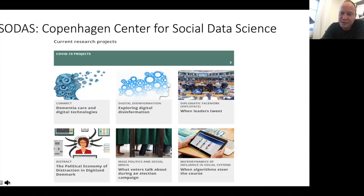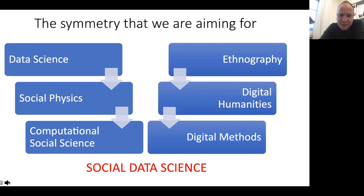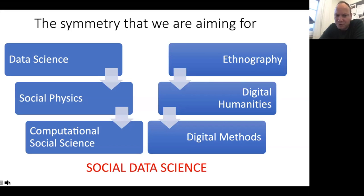All disciplines come from somewhere and bring certain aspects with them, including anthropology. What we're trying to get at at SODAS and in the new degree program is a symmetrical move, bringing together two often separate strands: computational social science — a big thing in sociology departments in the US and increasingly in Europe, essentially beefing up traditional quantitative social science with data science approaches, sometimes called social physics — and on the other hand, various ways of doing ethnography online, the wider field of digital humanities, and digital methods.